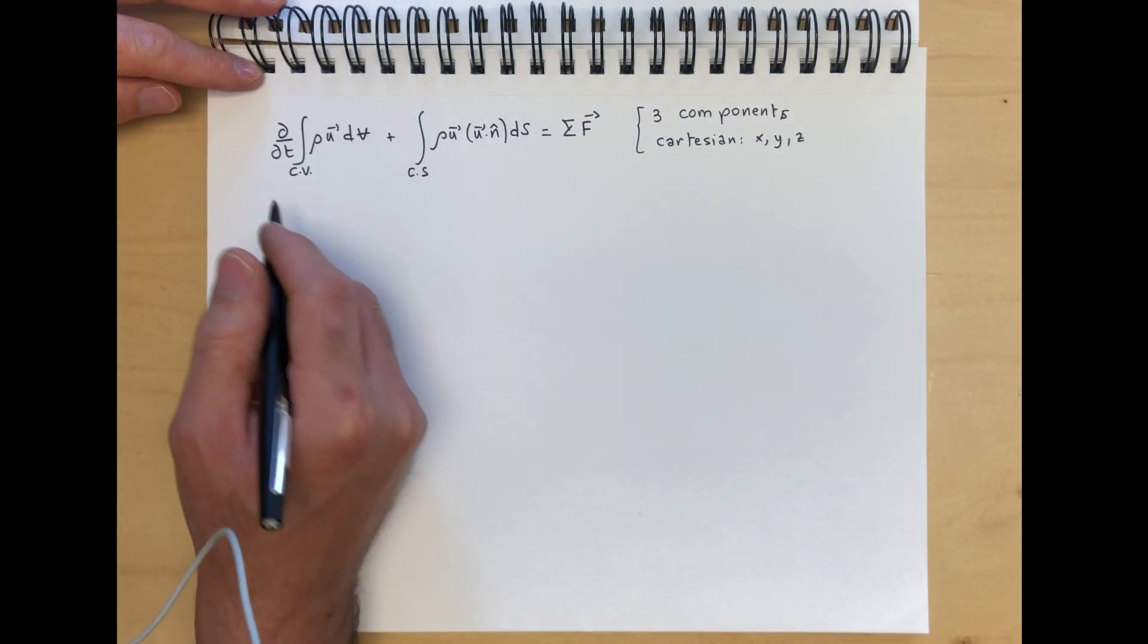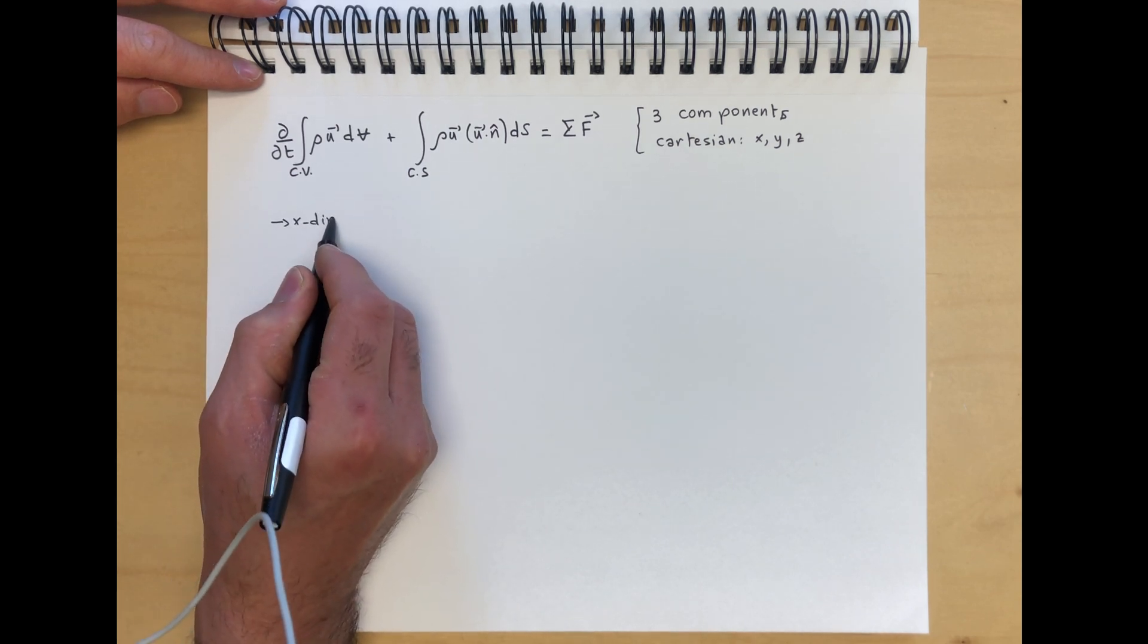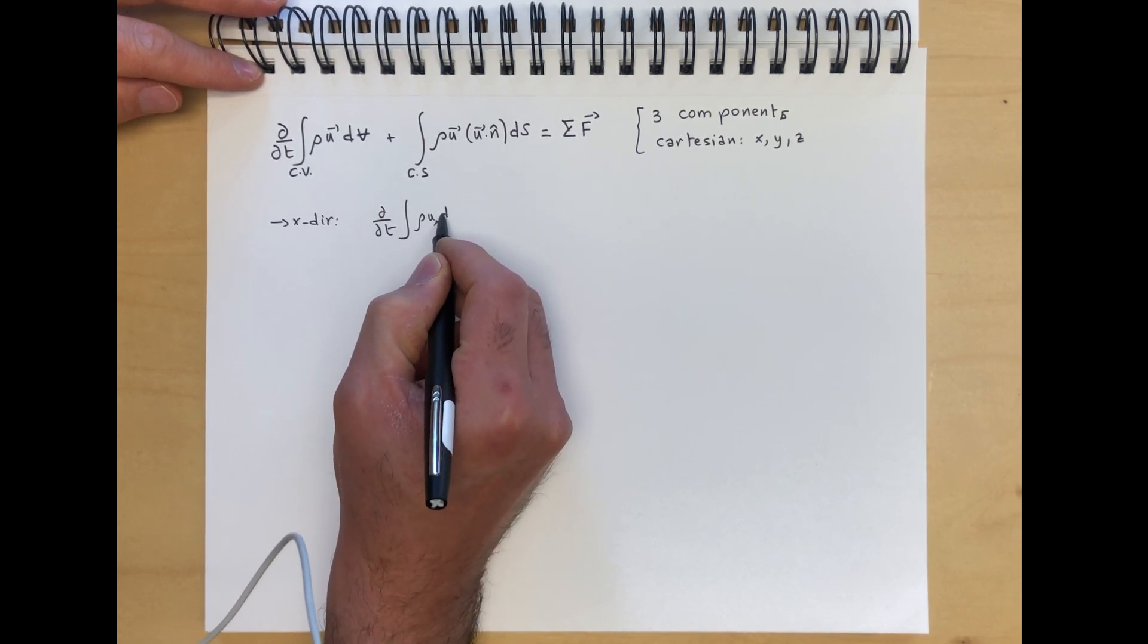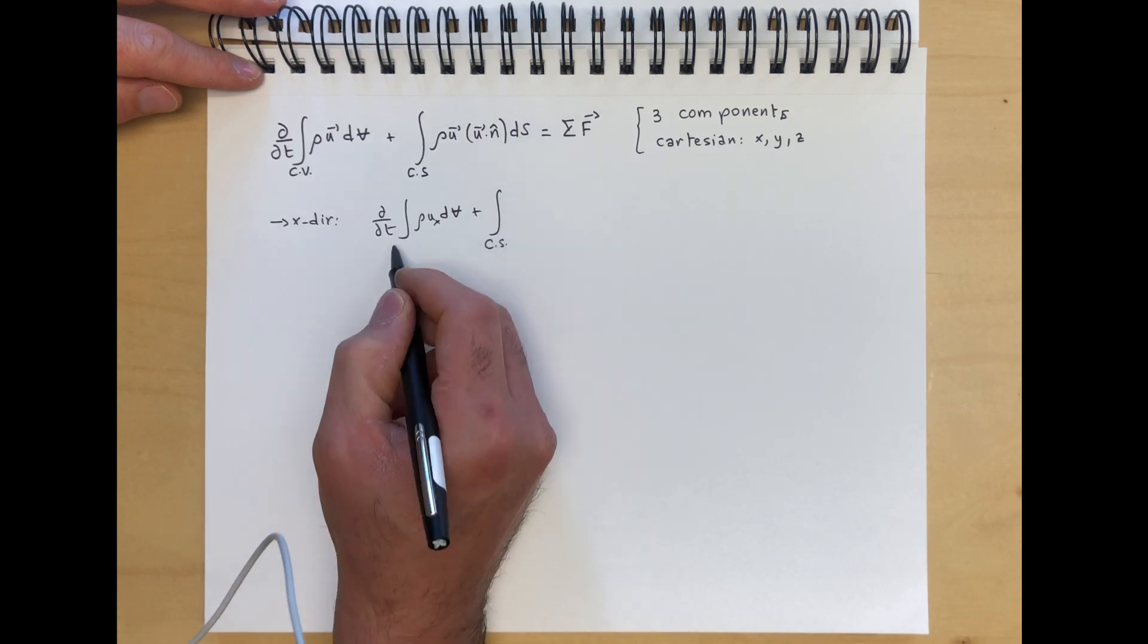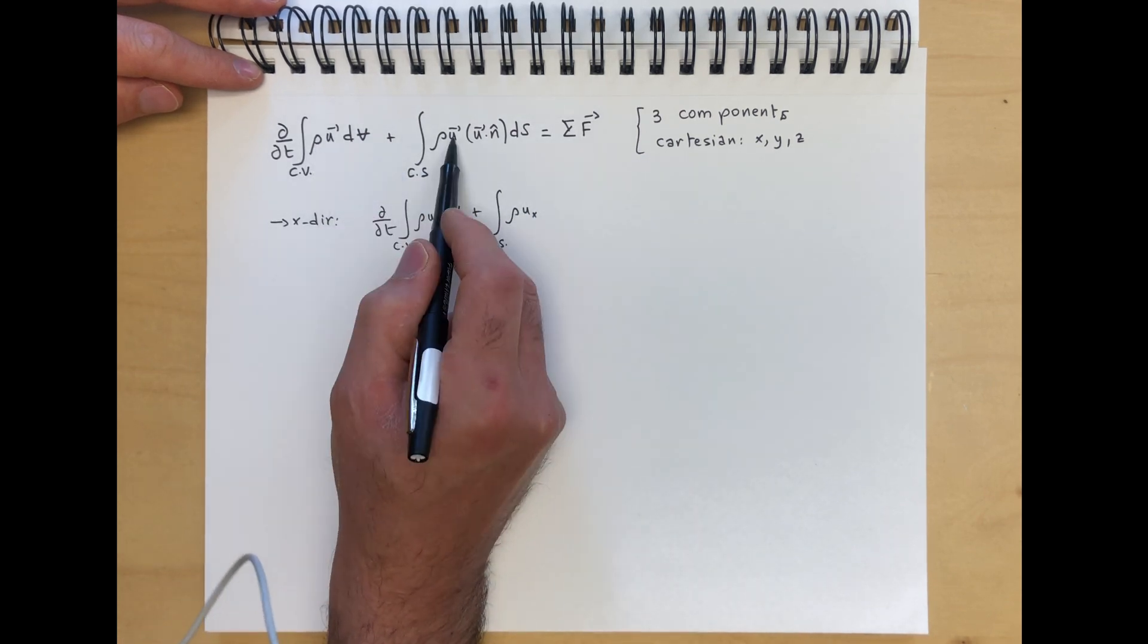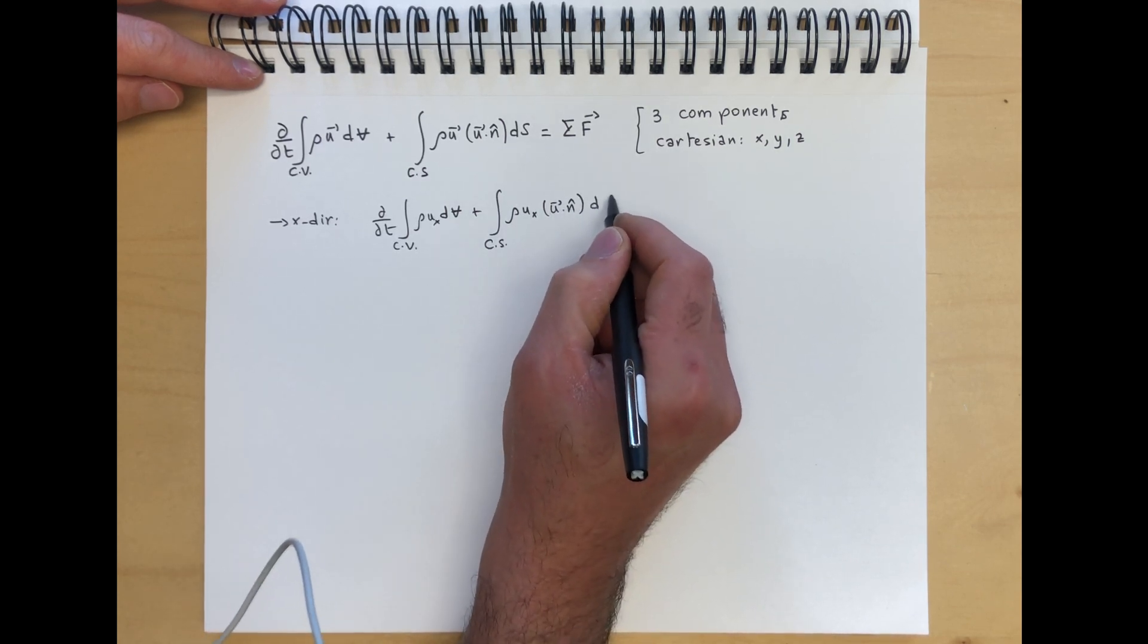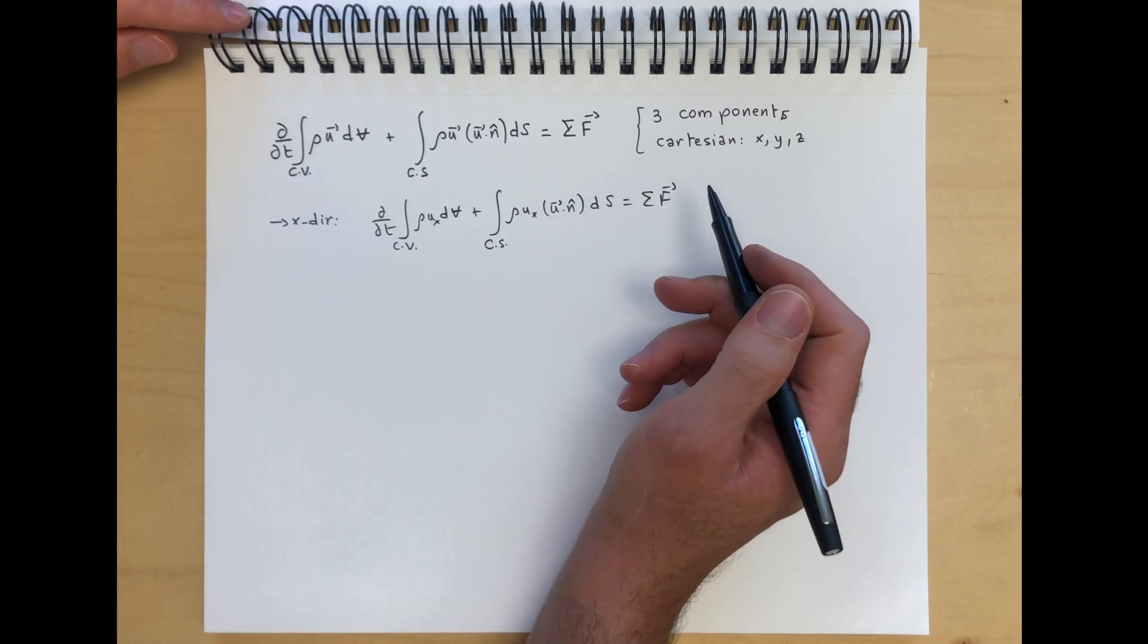For example, this would be for the x component, x direction. This would be partial by partial t of integral rho u_x dv plus the integral over the control surface of rho u_x. Remember, this is what we're transporting, x direction times u dot n. This is the entire vector. ds equals summation of forces.